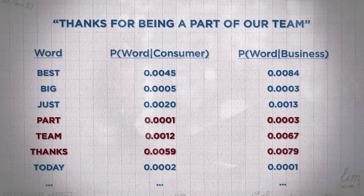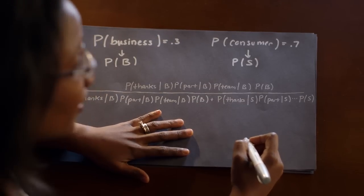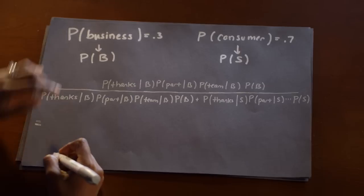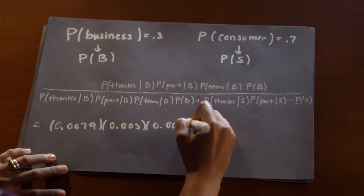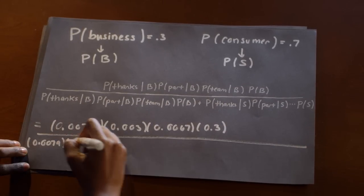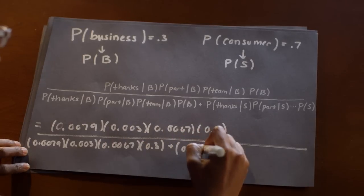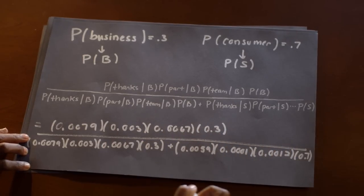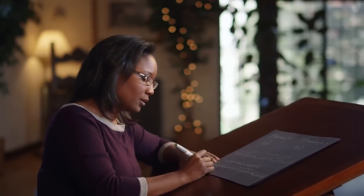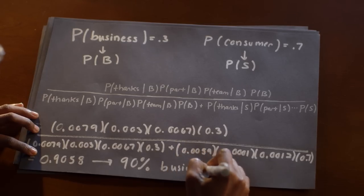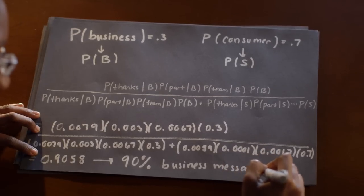The probability of a business message is 0.3, or 30 percent, which we denote as P(B). The probability of a consumer message is 0.7, which we denote as P(S). Using our formula for C-MAP, we can plug in the probabilities from our table. We have the probability of 'thanks' given business, probability of 'part' given business, and the probability of 'team' given business, times P(B) in our numerator, divided by the sum of those relative to being a business or coming from a consumer. When we calculate this probability, we get 0.9058, which tells us there's over a 90 percent chance that this is a business message.